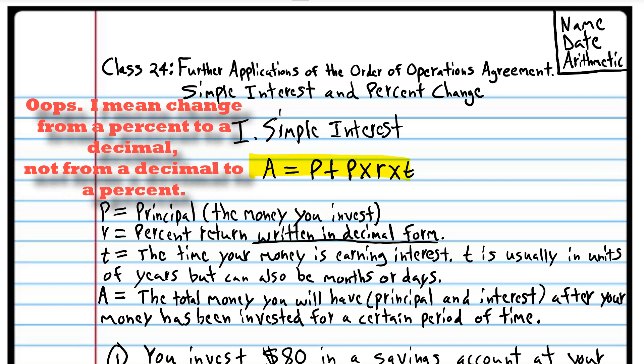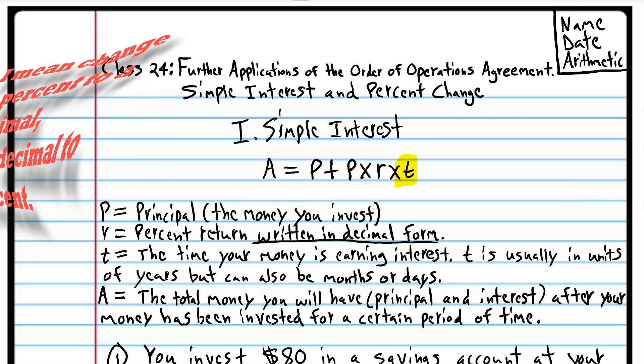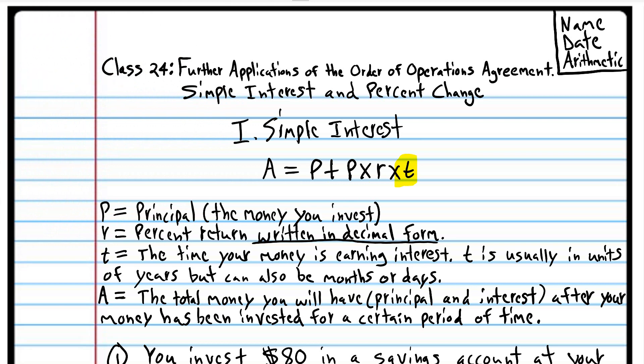The percent must be written as a decimal, or this formula is not going to work, so be aware of that. And T is the amount of time that the money is in the savings account.